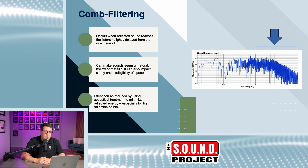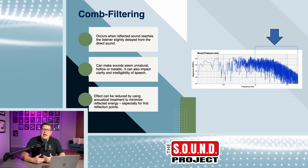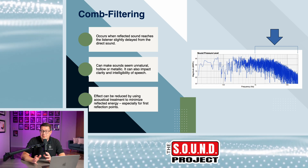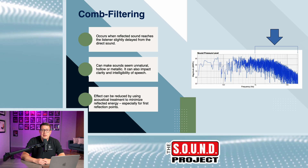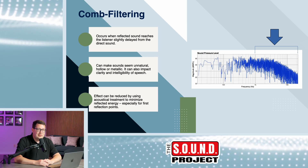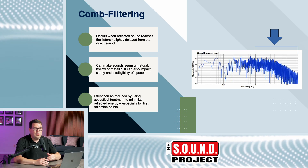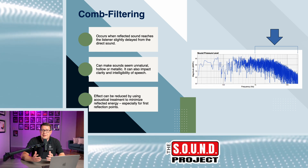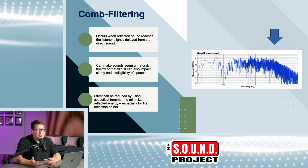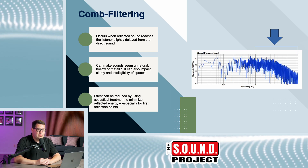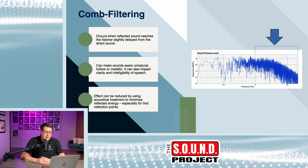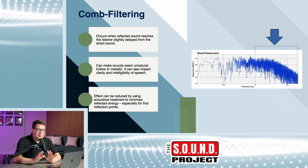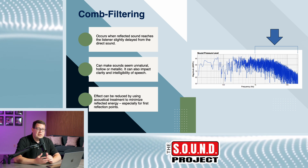It's called comb filtering because it looks like the teeth of a comb. It can create an unnatural, hollow, almost metallic sound in the room and impact the clarity and intelligibility of speech in larger rooms. Comb filtering can be taken care of with proper acoustical treatment, especially by hitting first reflection points — the halfway distance between you and your speakers on the sidewalls, front wall, rear wall, and ceiling. If you treat those with acoustical treatment, comb filtering will be greatly reduced. I highly recommend starting your room treatment journey with first reflection point treatments, then moving on to bass trapping and diffusion.